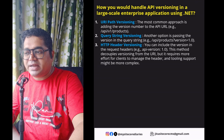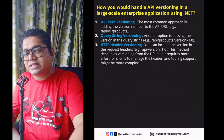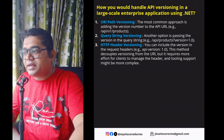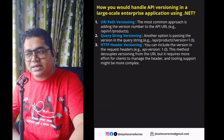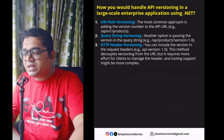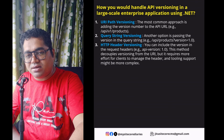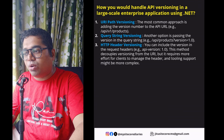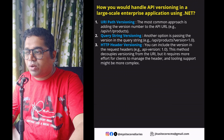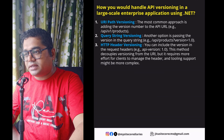The third method is HTTP header versioning, which is a bit more complex. You include the API version in the request header itself. This method decouples versioning from the URI, but it requires more effort from clients to manage the header, and tooling support can be more complex. However, it is still a clean approach.